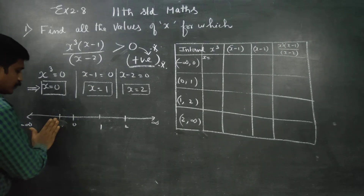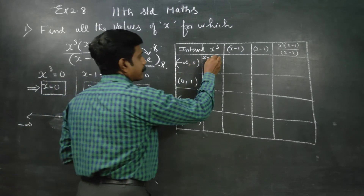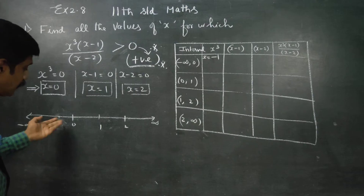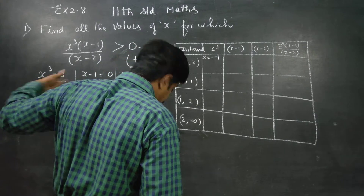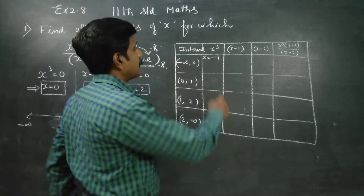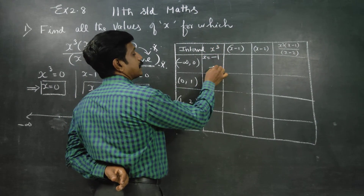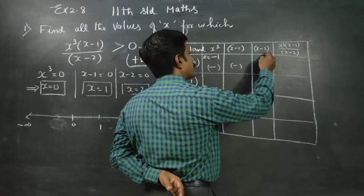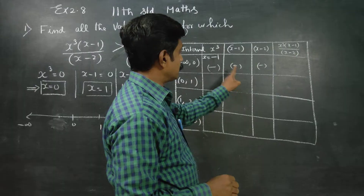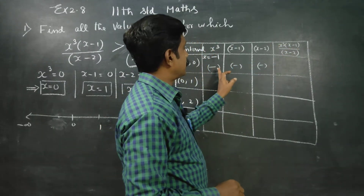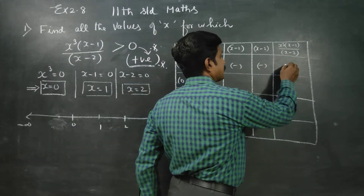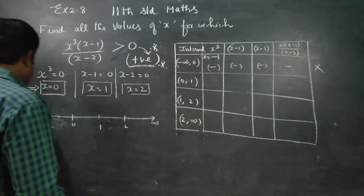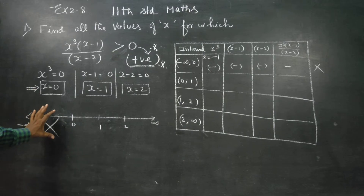I am trying x equal to minus 1 in the interval minus infinity to 0. Substituting x equals minus 1: x cubed gives minus 1, which is negative. x minus 1 gives minus 2, which is negative. x minus 2 gives minus 3, which is negative. Negative times negative times negative gives a negative result. This interval is not fit for us.